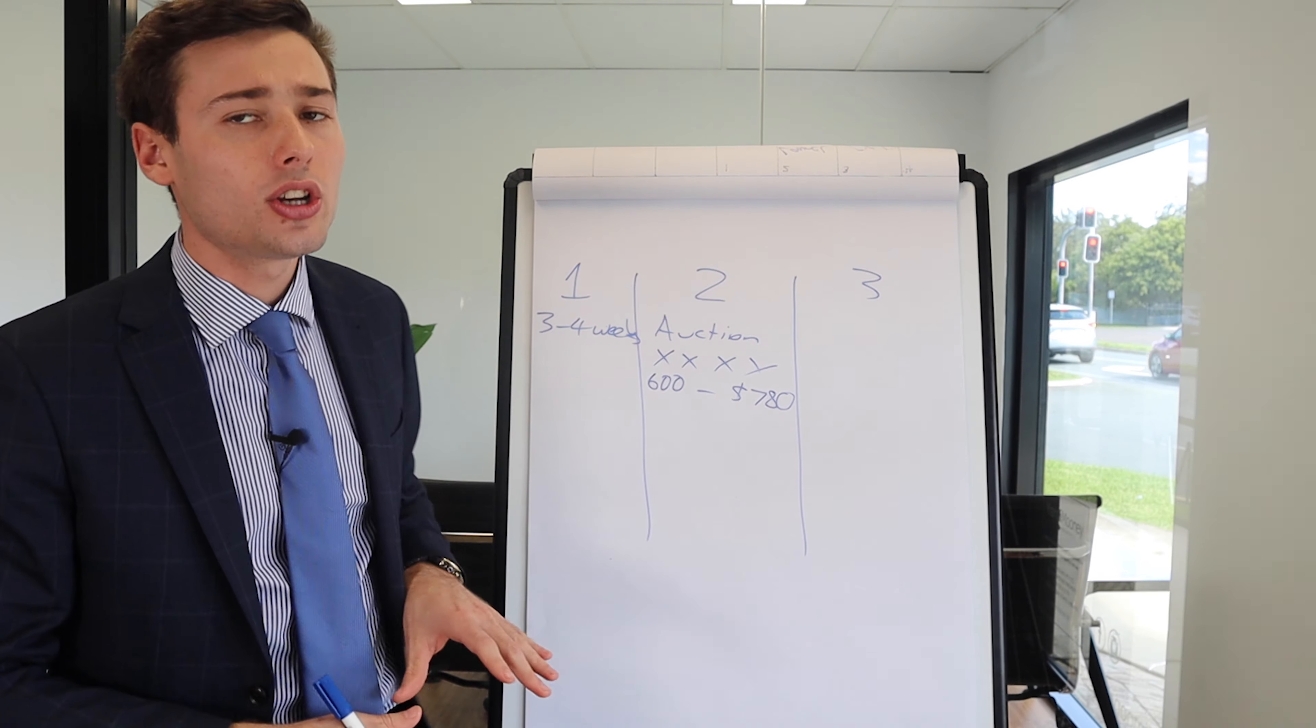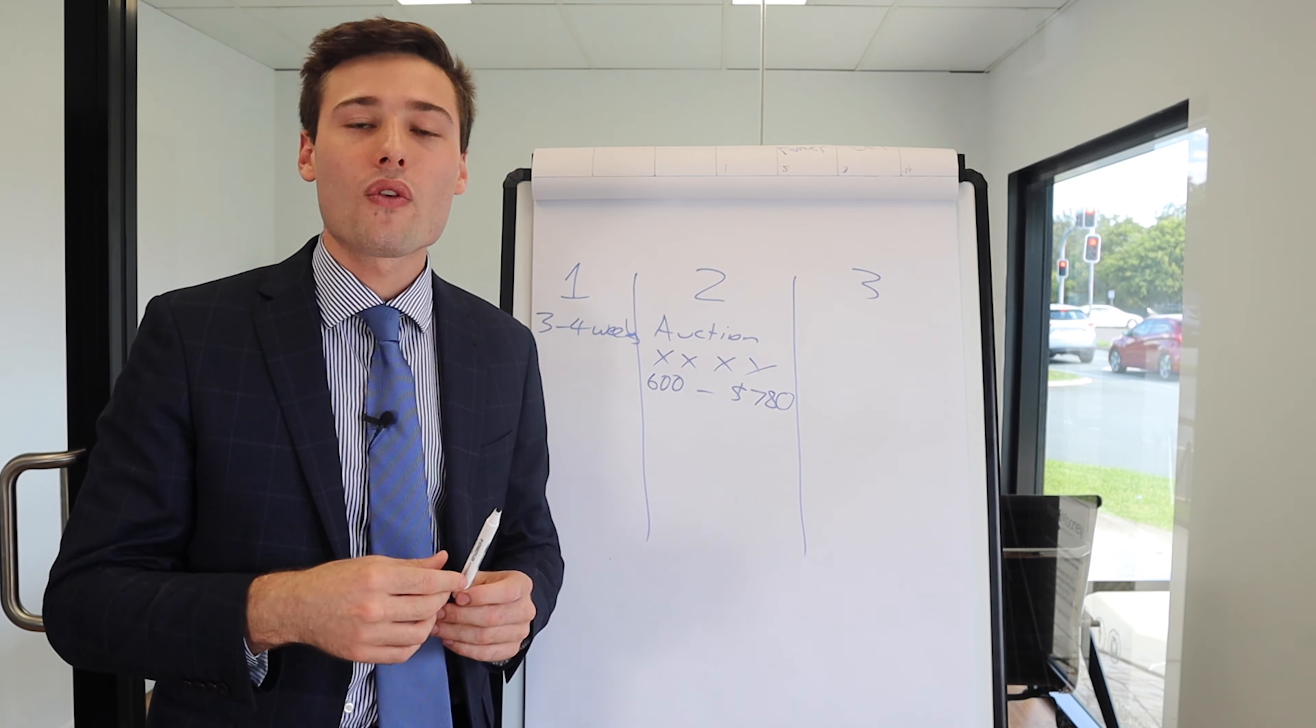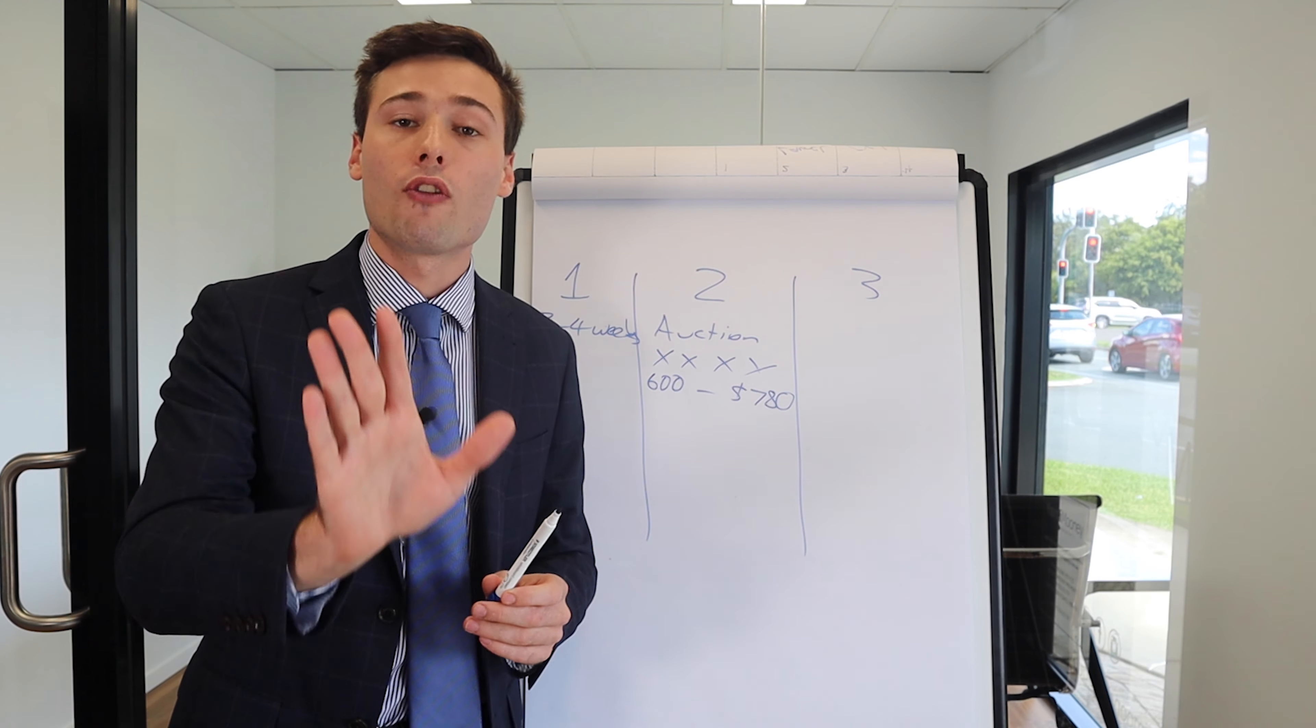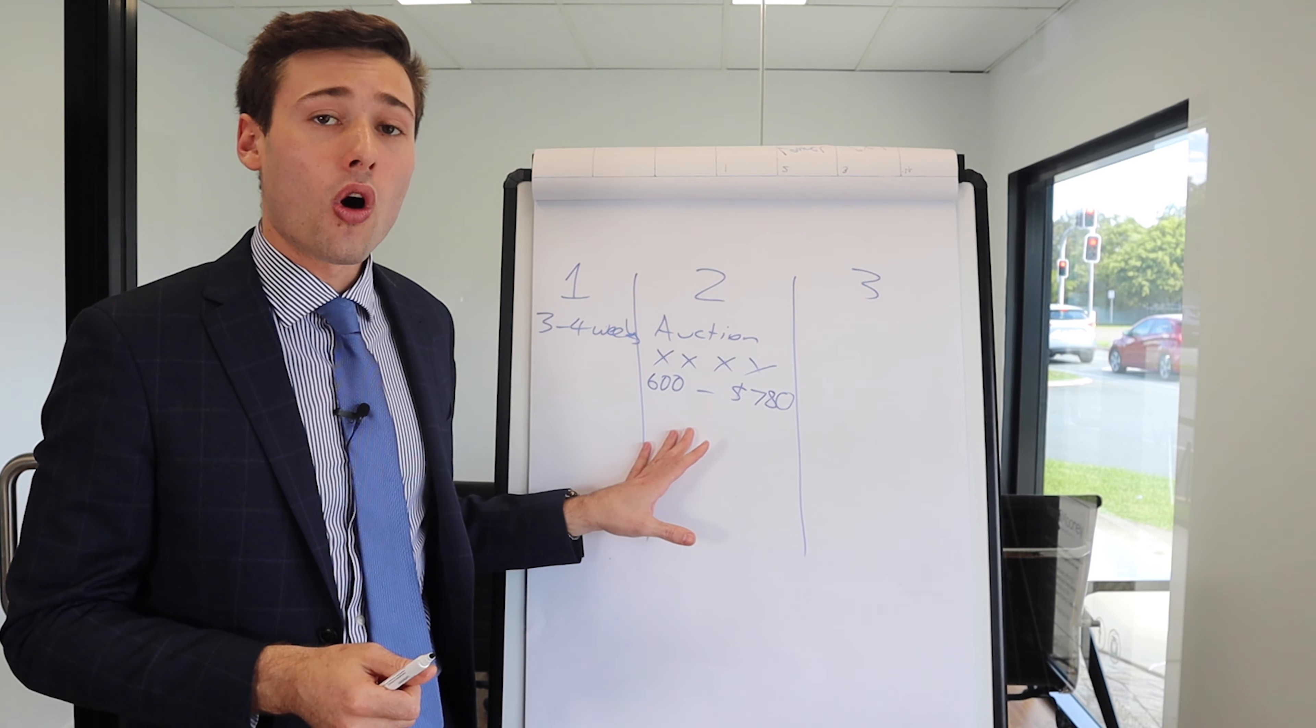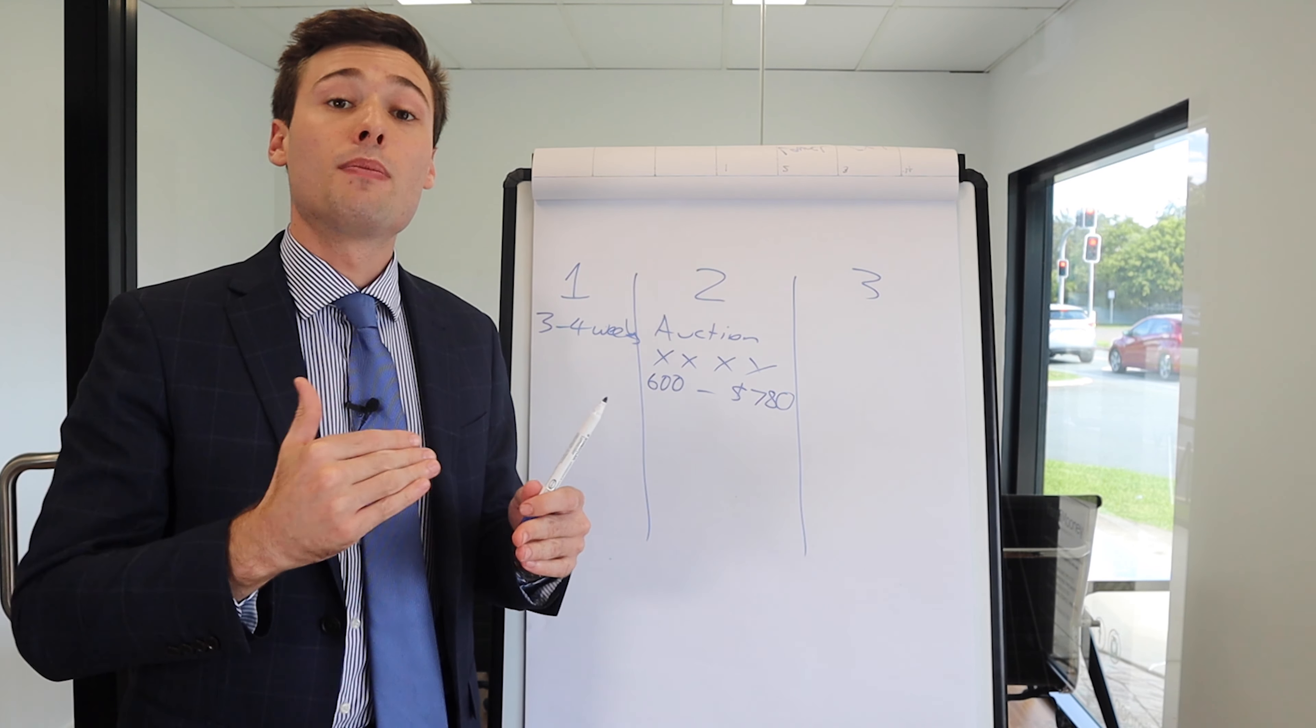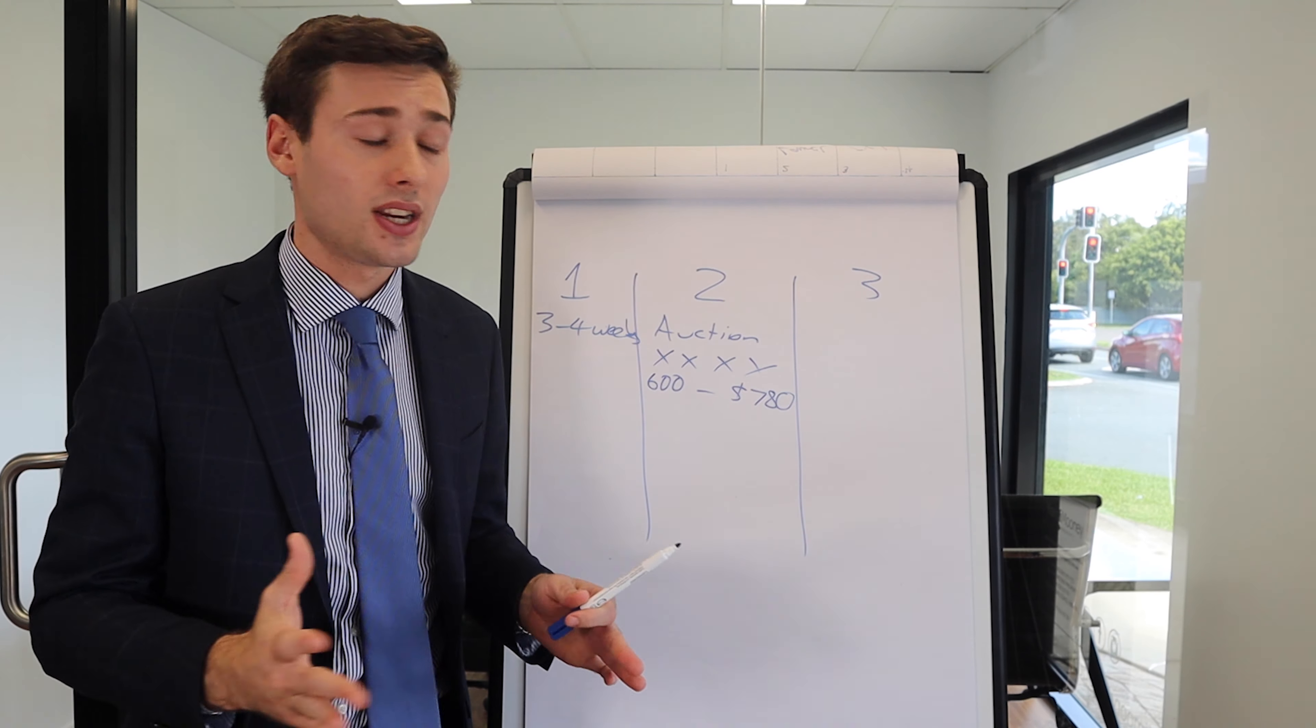This process, the only time you need to set a price is after you've got four weeks or however long of marketing reports of buyer feedback, and you set that price before the auction. Now the reserve price is the figure that if the bidding falls under that figure, it simply won't sell. So it's your safety net.